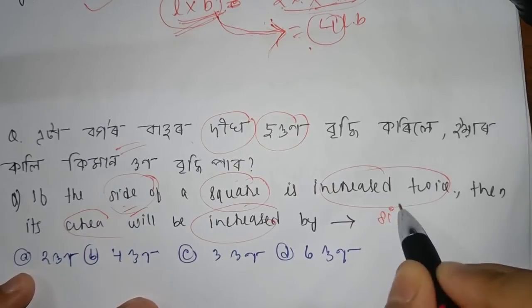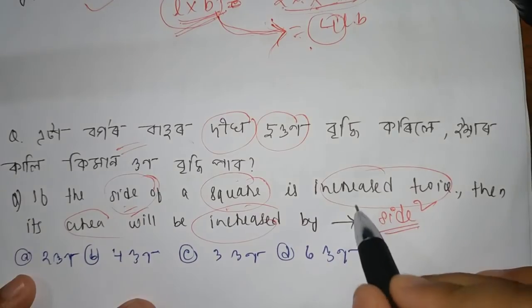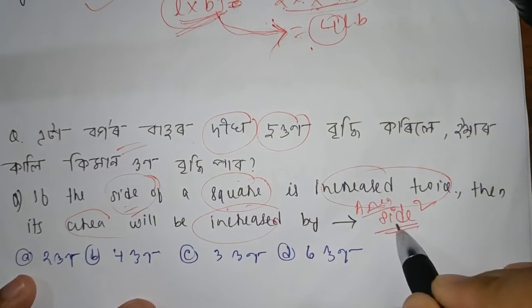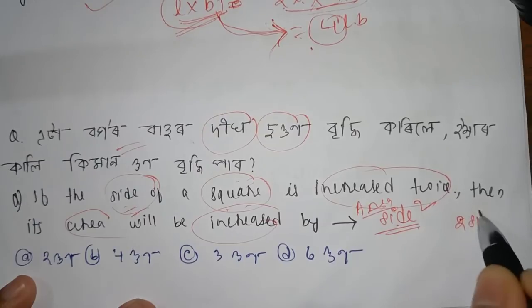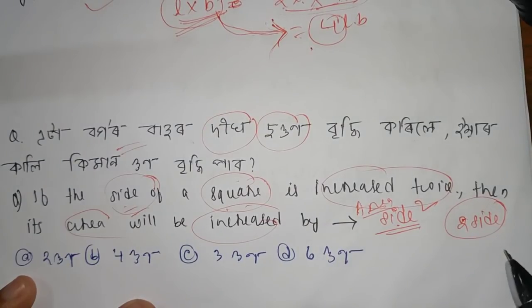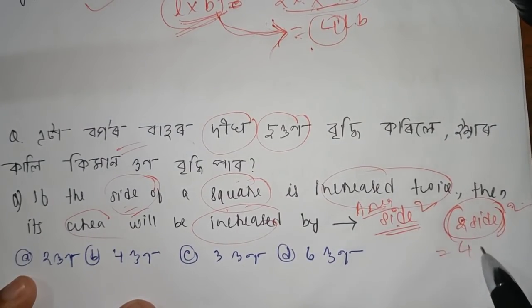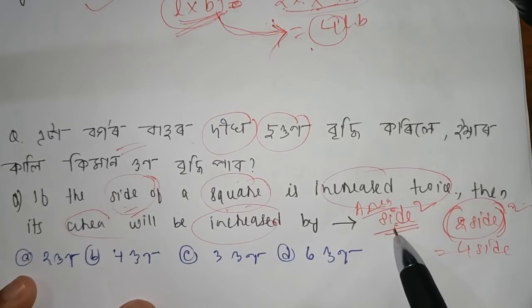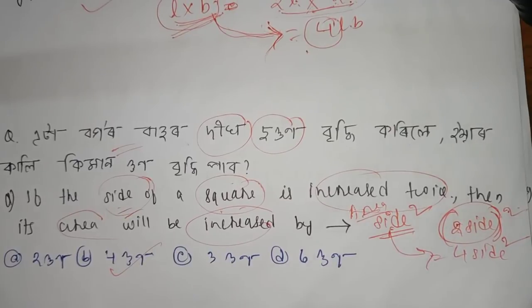Normally, the area of a square is side squared. If the side is doubled, the new side square becomes 2 times the side, which is 2 squared into side squared, meaning the area becomes 4 times. 4 means size into side.